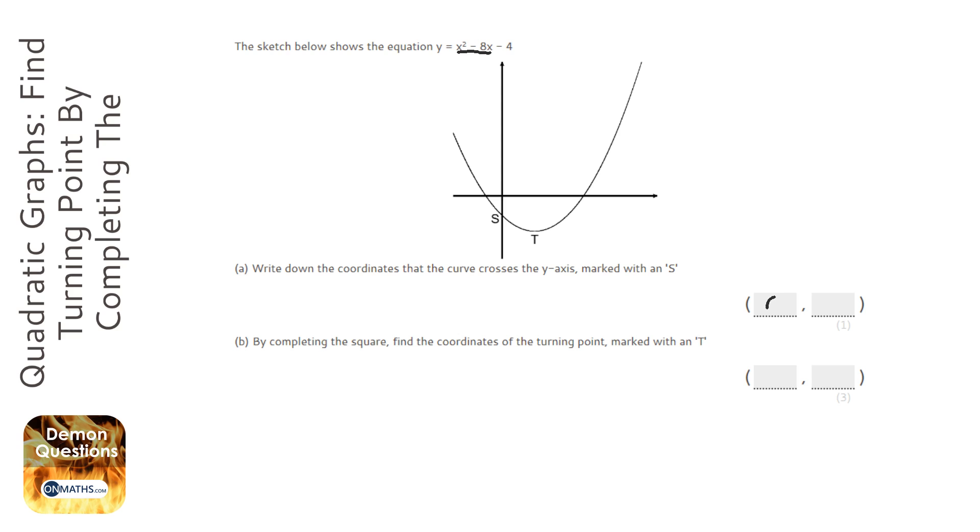So x is going to be 0, and y is going to be minus 4, so that's nice and easy. And basically, whenever you just have a number in an equation, the y-intercept is that number, so it's going to be minus 4.